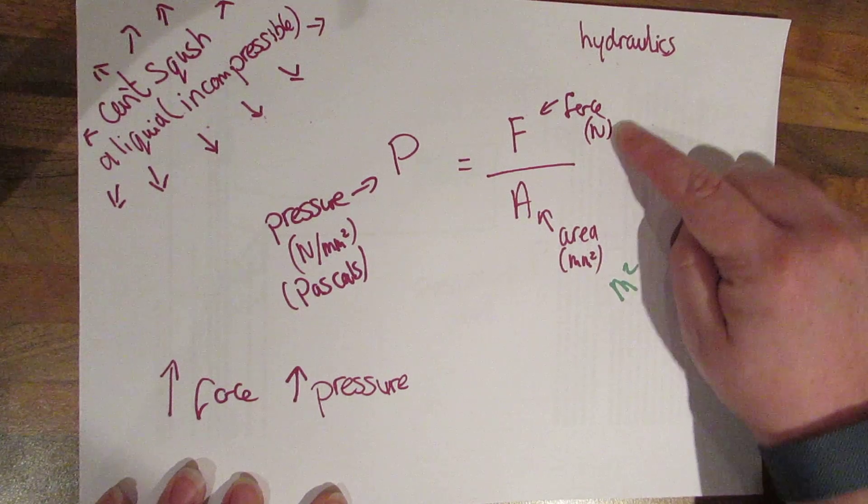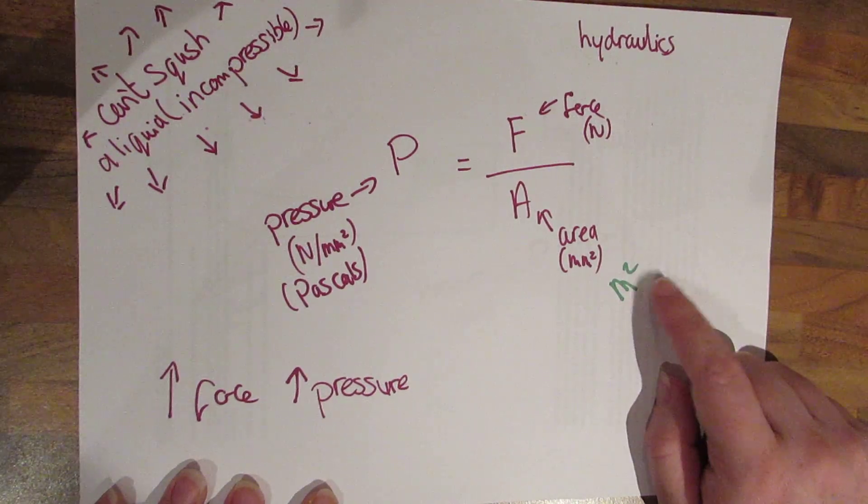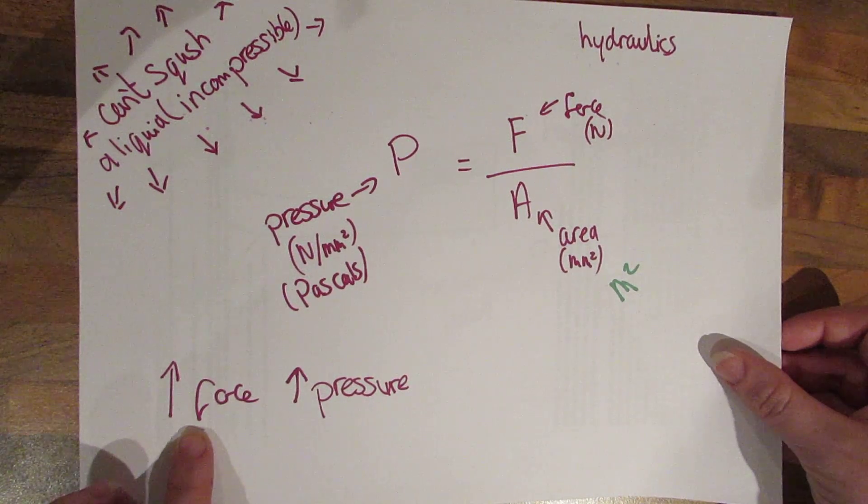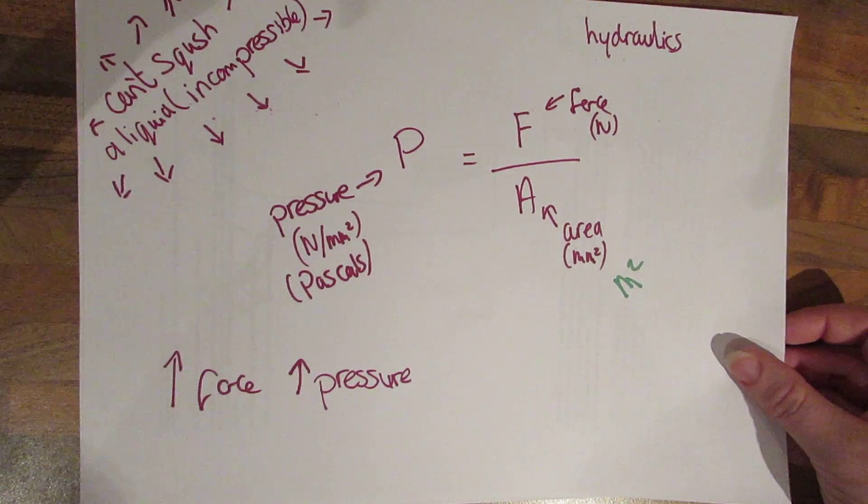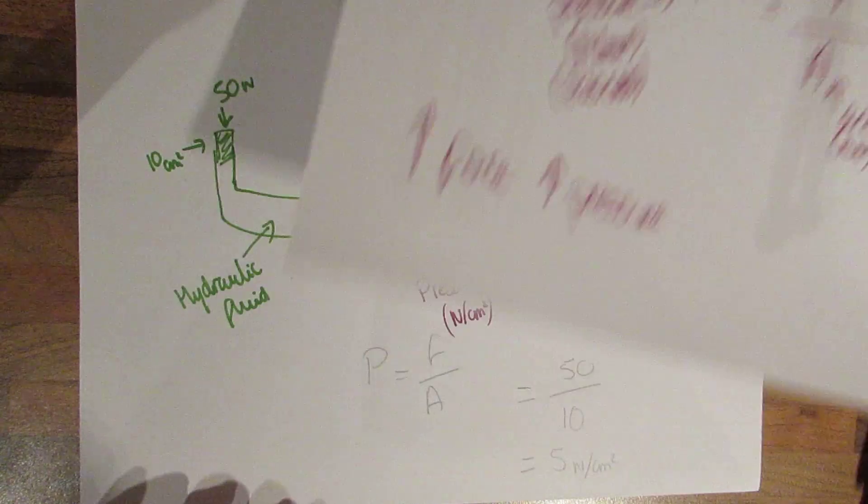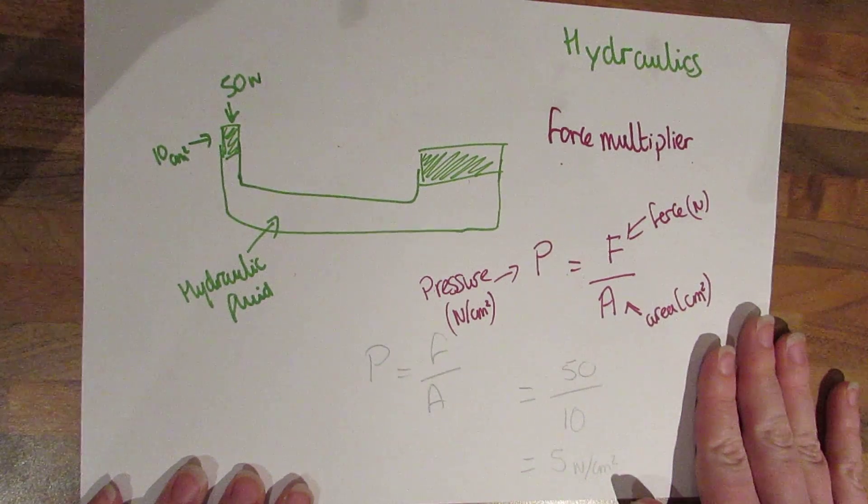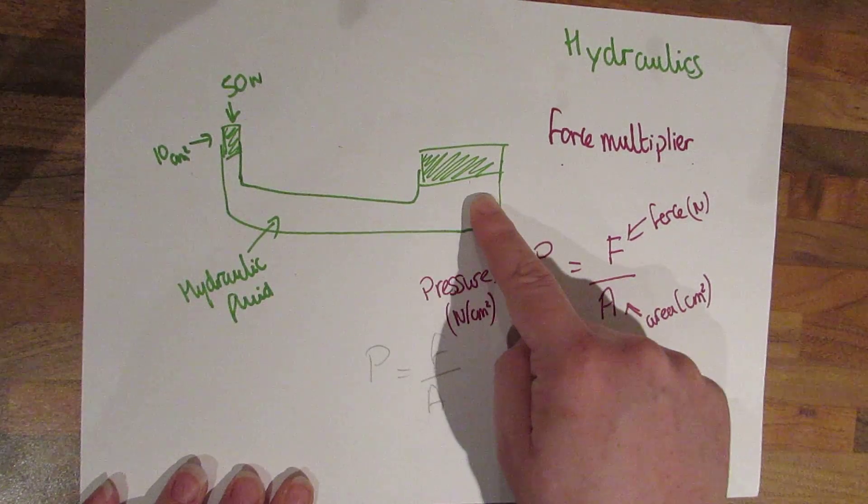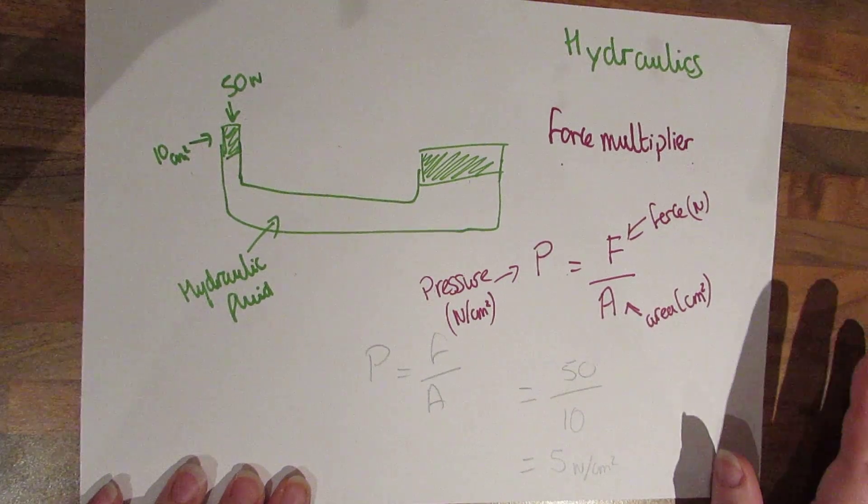The force is always in newtons. The area, they seem to do it in a different way for every single exam paper, but the traditional area is metres squared. And you need to know that as we increase the force, we're increasing the pressure. The pressure on a liquid is going to be in every single direction. So this is our hydraulics, it's a force multiplier. We are going to have the same pressure inside here, even though here we have two different areas. And here's just a quick example for you to look at.